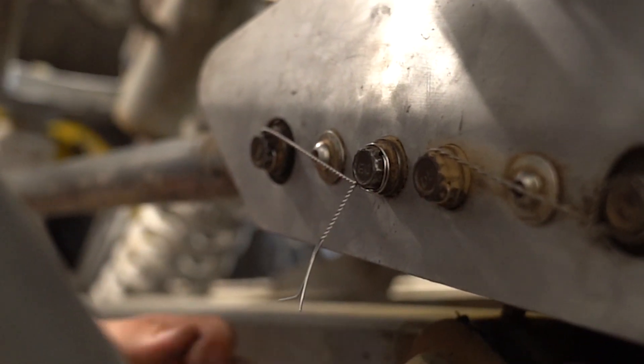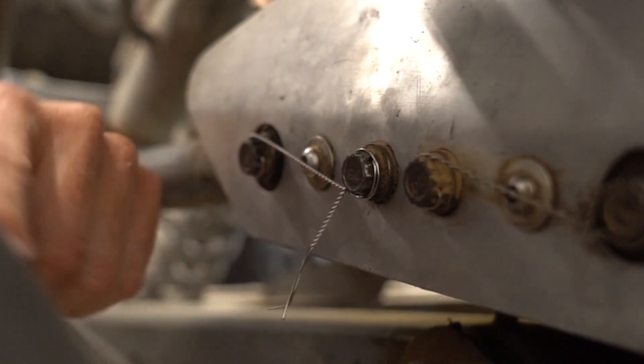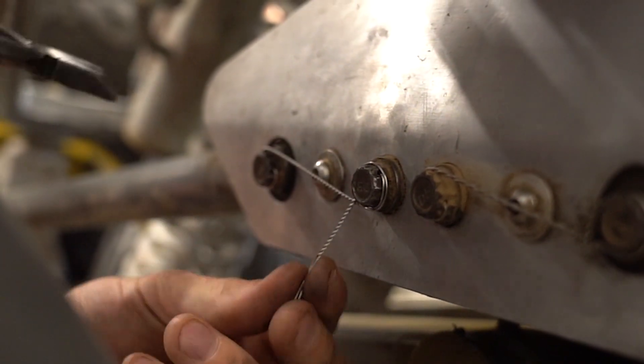And there we actually use the reverse function on the pliers so that we're always spinning into the bolt, so the wire doesn't want to come off the end of the bolt.